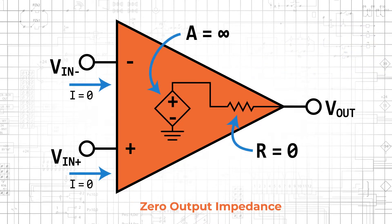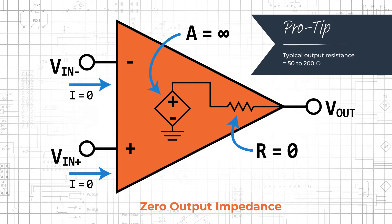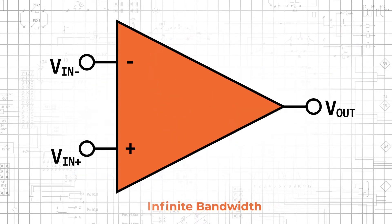The VCVS op amp model shows no resistance in series with the output terminal, indicating that the idealized op amp has zero output impedance. Real-life op amps typically have output resistance of 50 to 200 ohms, but the effective output resistance is greatly reduced by negative feedback. In some cases, it is appropriate to incorporate output resistance into a careful analysis of an op amp circuit.